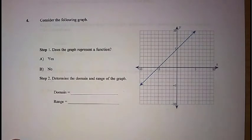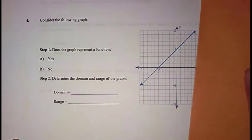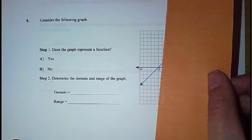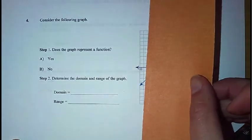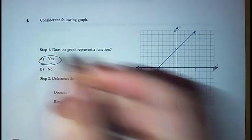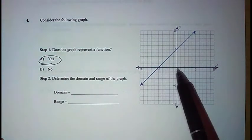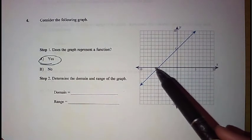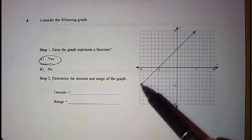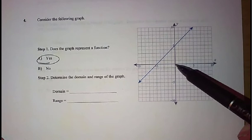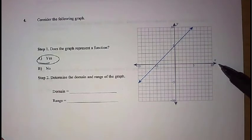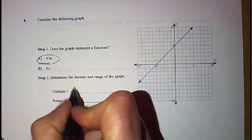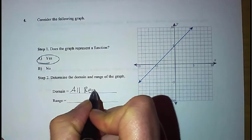So again, asking ourselves, is this a function? If I take my handy-dandy piece of paper here and I sweep across my function from right to left, notice that my piece of paper only touches my blue graph one time. So this indeed is a function. Now, as I think about moving from the left to the right across my x-axis, notice that my graph continues to drop down. So for all of these x values across here, I will have a spot on my graph. The same thing is true as I think about all these positive x values across my x-axis. They all have a spot along my line. So my domain here, again, would be all real numbers.